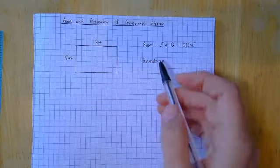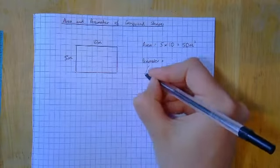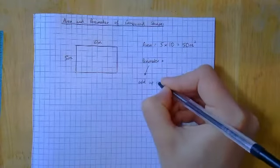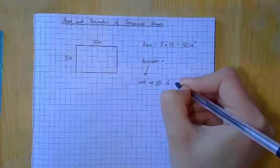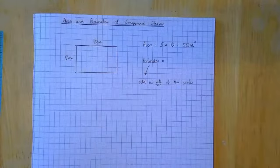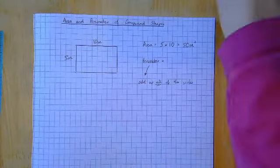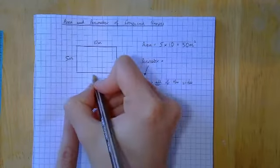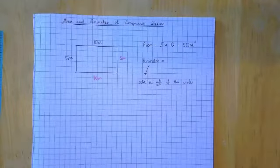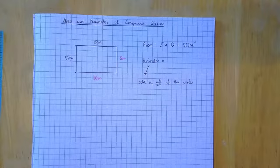If it was centimetres, I'd have centimetres squared. If it was millimetres, I'd have millimetres squared. But just remember when you've got area, you're going to end up with a squared up there. And then for the perimeter, you might just want to make yourself a little note. We need to add up all of the sides. Now they very rarely give you all of the sides. If I were you, onto your picture, I would add another 10, and I would add another 5.